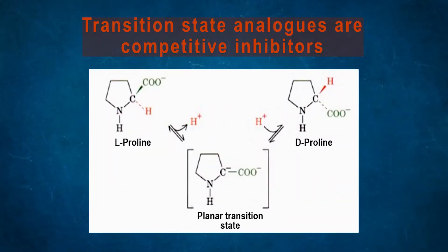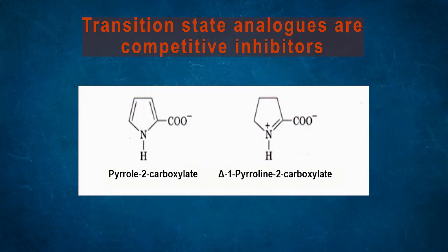Transition state analogs are competitive inhibitors. In the case of proline racemase, a planar transition state is formed. Pyrrole-2-carboxylate and delta-1-pyrroline-2-carboxylate resemble that transition state geometry.